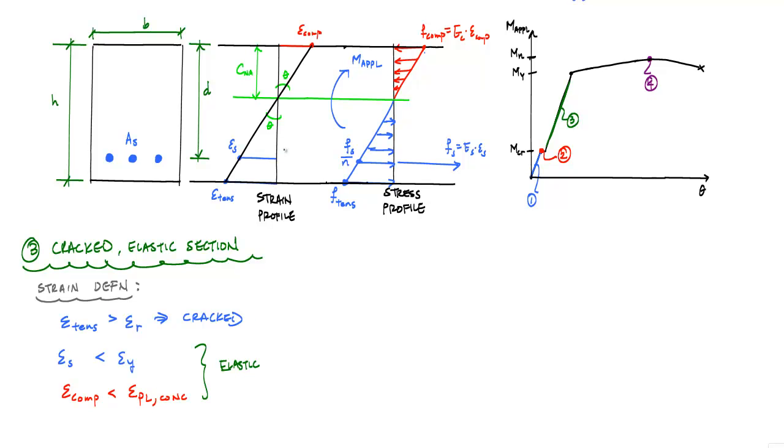Now because the cross section has cracked in tension and that crack has propagated up to the neutral axis, the strain profile may be good,